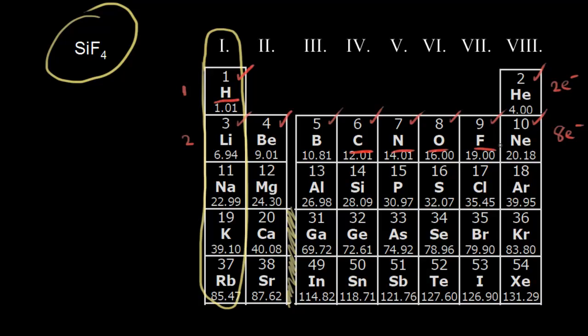It is possible for some elements in the second period to not have eight electrons — they can have less than eight. For example, boron will sometimes do that. However, it is not possible for second-period elements to have more than eight electrons. Always check your dot structures and make sure that if you have an element in the second period, you do not exceed eight electrons.